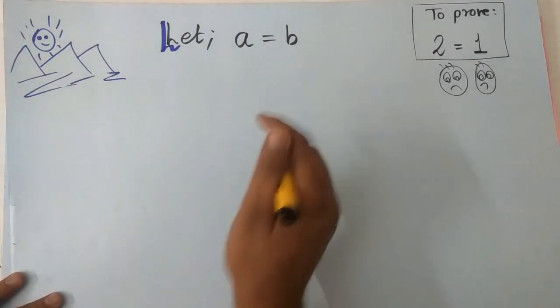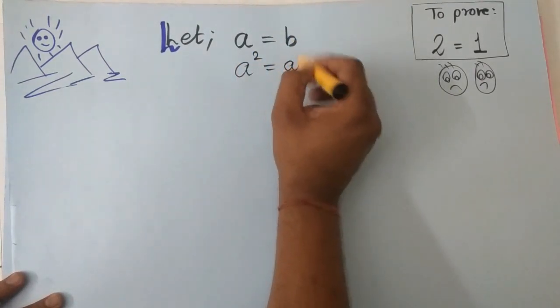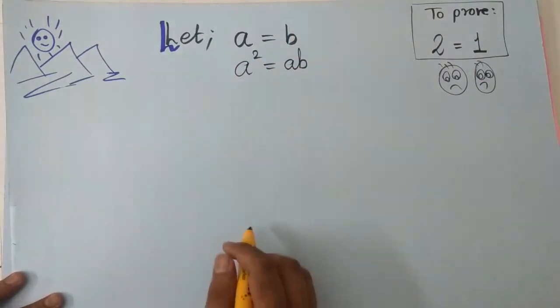Now multiply a both sides, so a into a would become a square and it would become ab.